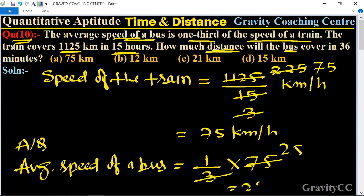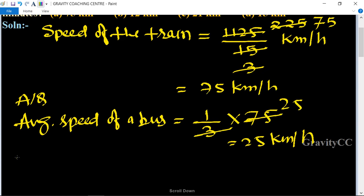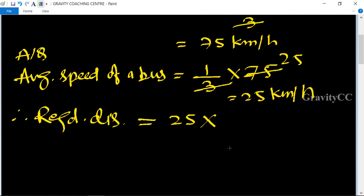This equals 25 kilometers per hour. Required distance is equal to speed into time, so 25 into time is 36 minutes. Converting 36 upon 60 kilometers, we cancel by table of 6: 36 and 60, then 10 and 5.